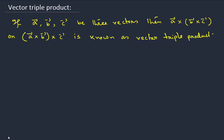Hello everyone and welcome to another lecture on vector algebra. In our last lecture we learned what is scalar triple product. In this particular lecture we will learn what is vector triple product. We take three vectors a, b, and c, then a cross b cross c is a vector triple product. b cross c is one vector and then we take the cross product of a with that, giving us the vector triple product.